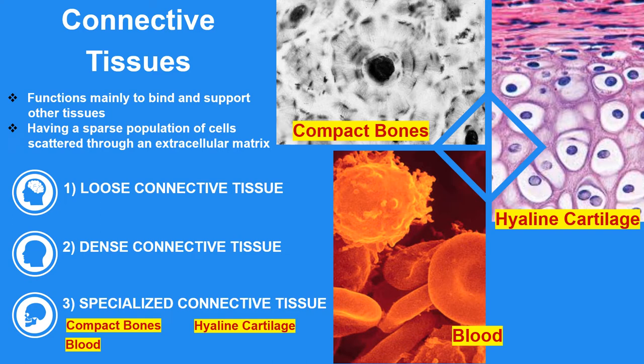Connective tissue serves a connecting function — it supports and binds other tissues in the body, fills the spaces between organs and tissues, and provides structural and metabolic support. Connective tissue is made up of cells scattered throughout an extracellular matrix of fibrous proteins and glycoproteins attached to a basement membrane. The primary elements include ground substance, fibers, and cells. Fibers and matrix are synthesized by specialized cells called fibroblasts. There are three main groups: loose connective tissue, dense connective tissue, and specialized connective tissue.